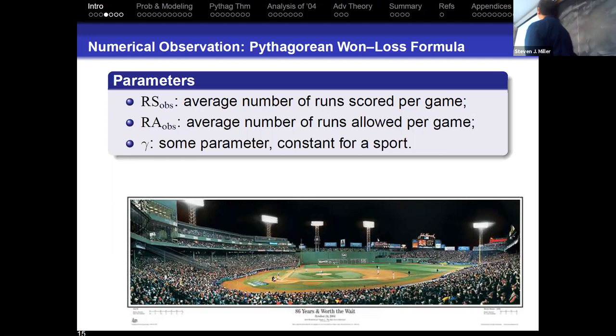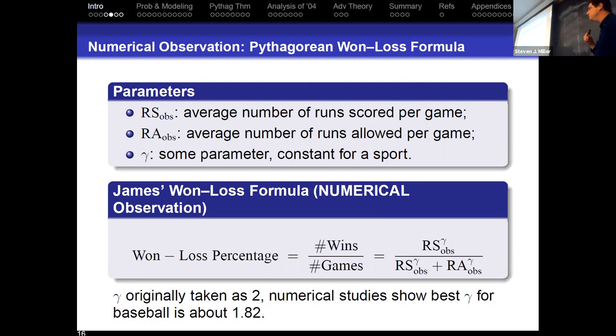So numerical observations. We need parameters to describe what's going on. So RS observed is the average number of runs scored per game, RA average number of runs allowed, and gamma is some parameter constant for scoring. Baseball will be different in scoring than basketball, will be different than football. And what Bill James numerically observed is that a team's winning percentage, number of wins divided by number of games, is extremely well modeled by runs scored to the gamma over runs scored to the gamma plus runs allowed to the gamma. And when he first did this, he took gamma to be 2. Now we think that in baseball, the best value is around 1.82. But 2 is not bad. It does a pretty good job.